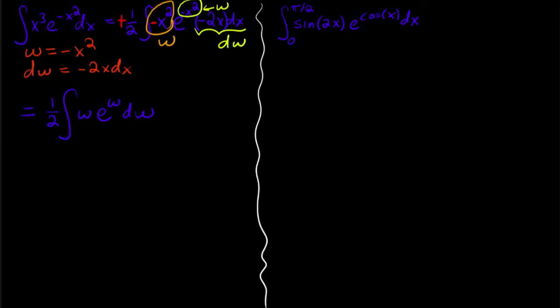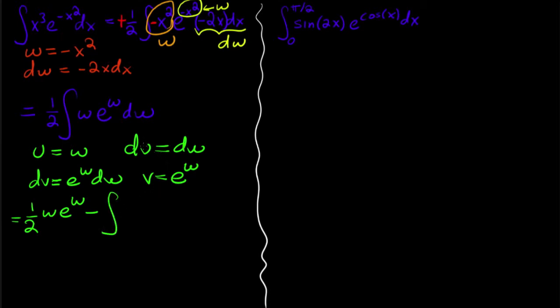So when I do that, what I get is this is equal to one half the integral of w e to the w dw. And now this looks like a better spot to use integration by parts. Because here I can let u equal to w. I can let dv equal to e to the w dw. So then du is going to equal to dw. V is going to equal to e to the w.